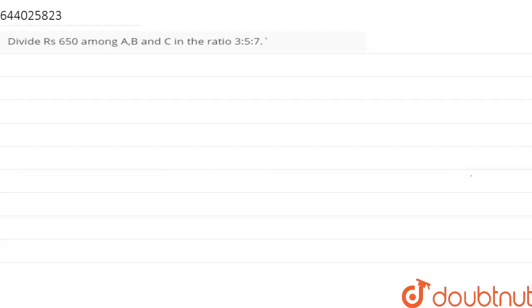Hello everyone, today we have a question from ratio and proportions. The question is: divide 650 among A, B, C in the ratio of 3:5:7. That means we have people A, B, and C, and we have to divide 650 within them in the ratio such that they get an amount in the ratio of 3:5:7.